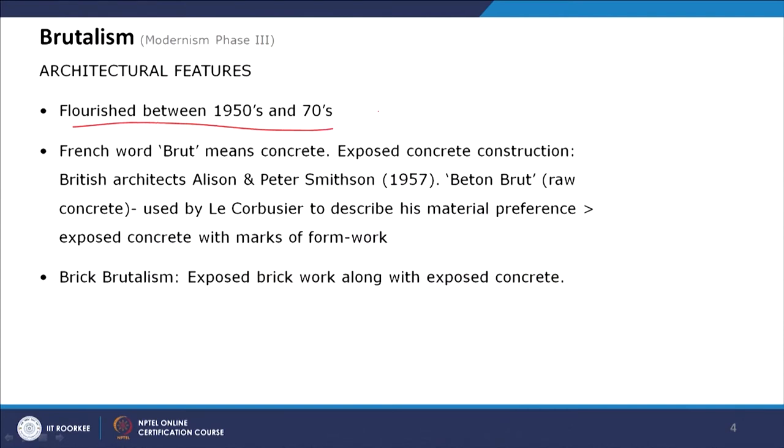Brutalism, metabolism, tensile and shell all transformed and changed their style, percolating into the post-modern movement. The architectural features of brutalism flourished between the 1950s and 1970s, and was carried forward later in different forms as neo-brutalism. Many architectures can fall under both brutalism and metabolism.